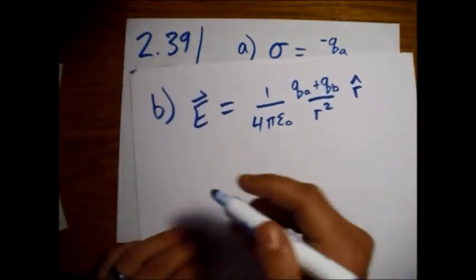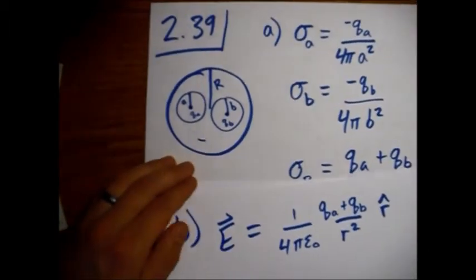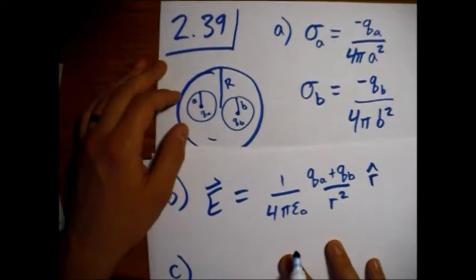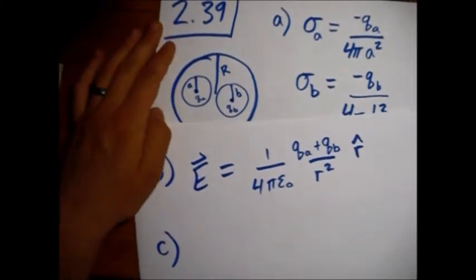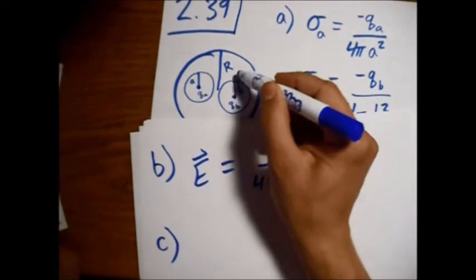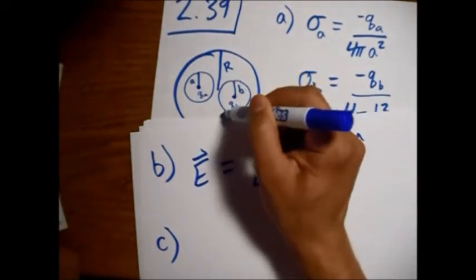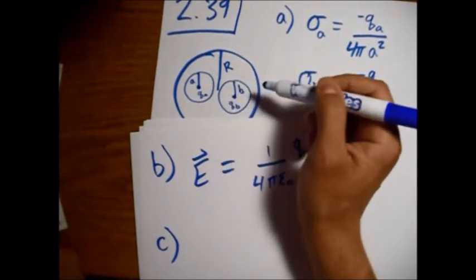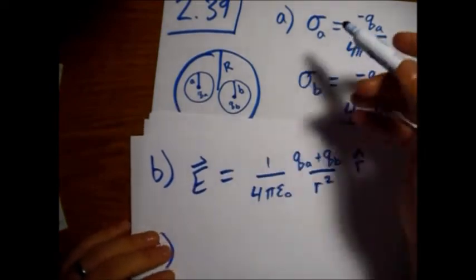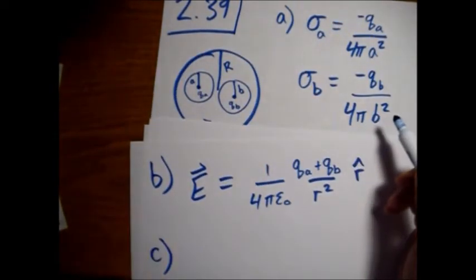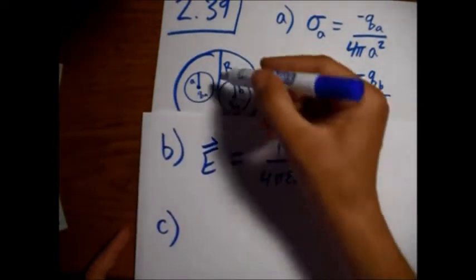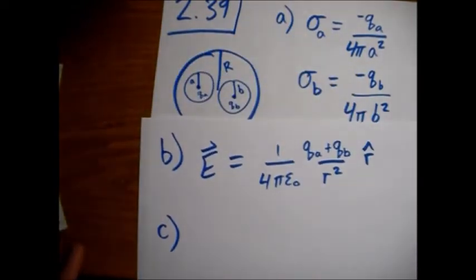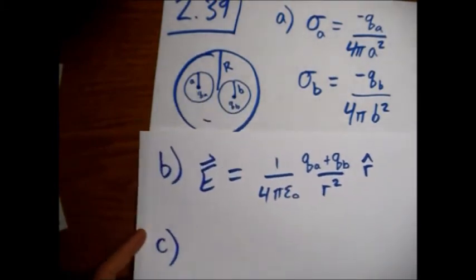What is the field within each cavity? Inside each of these cavities, what is the field? Well, just by Gauss's law, it's not affected by anything. Due to the symmetry and everything, all we have is this positive charge in here and then a minus charge evenly distributed around it. So there's no extra terms from external fields that we have to add in.